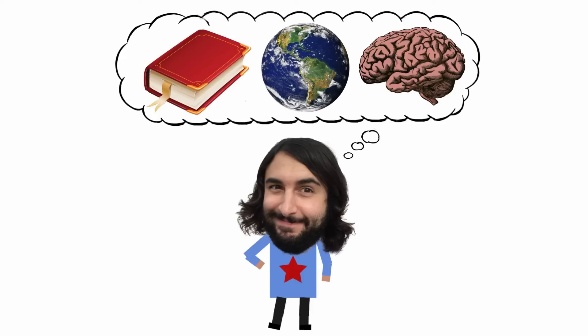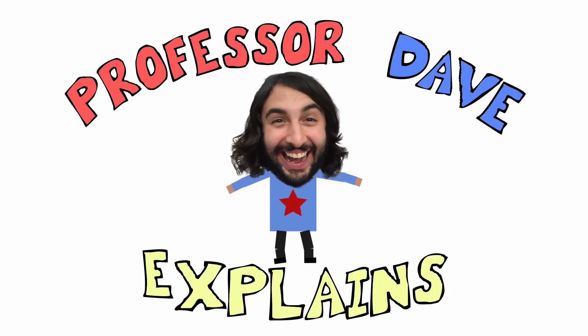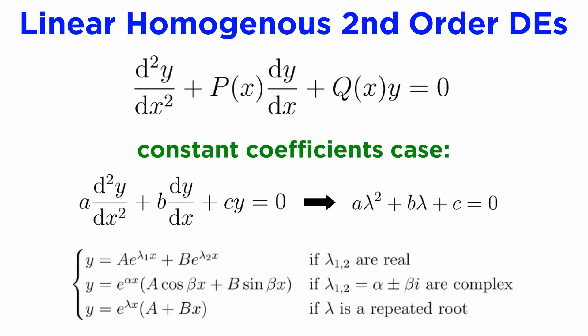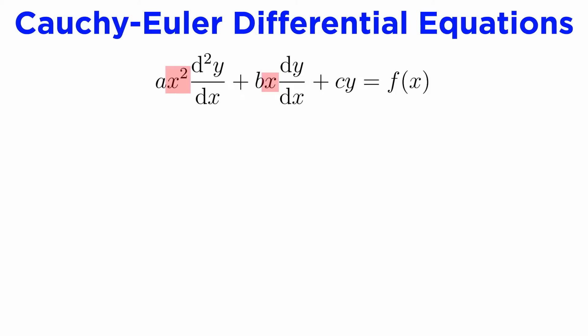Professor Dave Explains. We've been studying linear second-order DEs with constant coefficients, and now it's time to look at some more advanced ones. If instead of having constants multiplied by each y term and its derivatives, we have powers of x whose order matches the order of the derivative, then we call this a Cauchy-Euler differential equation.